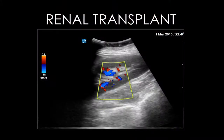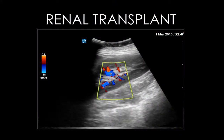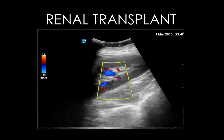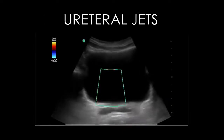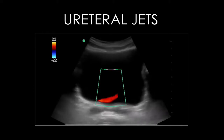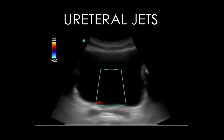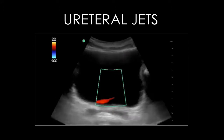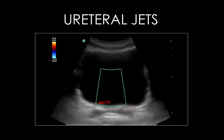This video is from a patient with a renal transplant located in the pelvis. You can clearly see there is blood flow to the kidney. Another way to check for patency of a ureter is to look for evidence of urine entering the bladder. In this video, color flow is being used to visualize urine as it enters the bladder. This finding is often referred to as ureteral jets.